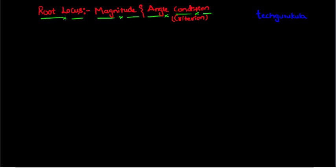In this video we're going to see magnitude and angle condition, also called as magnitude and angle criterion, in root locus technique. To understand this we have to go one step backwards and see how the root locus is defined first of all.